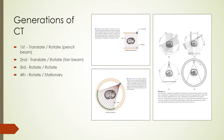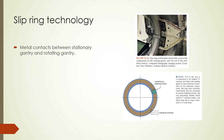In third-generation scanners, a curved detector rotates around the patient in synchrony with an X-ray tube in a rotate-rotate geometry — used by most modern CT scanners. A fourth-generation system has a circular ring of detectors in a fixed position with an X-ray tube rotating inside. Slip ring technology, which connects the rotating gantry to the stationary gantry without wires, enables this rotate-rotate geometry and helical scanning, leading to reduction in scan times.